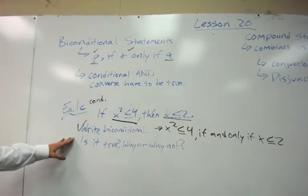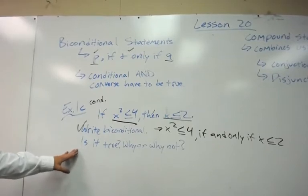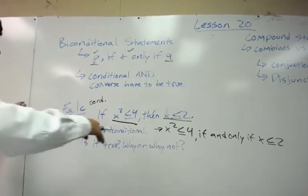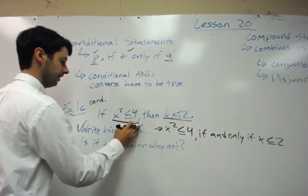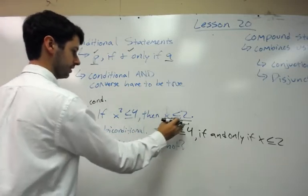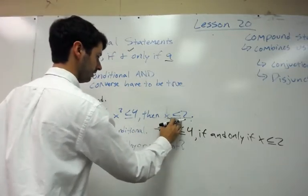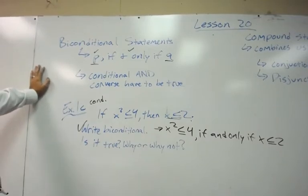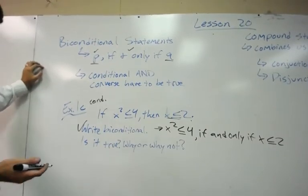So we've got the biconditional statement written down. Now we need to figure out whether it is true, and then why or why not. Well, let's look at the conditional statement first. Is this true? Is it true that if x squared is less than 4, then x is less than or equal to 2? So, for example,